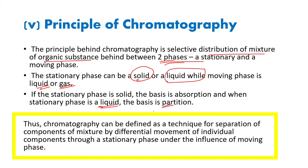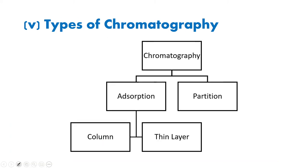So what is actually chromatography? Chromatography can be defined as a technique for the separation of components of a mixture by differential movement of individual components through a stationary phase under the influence of a mobile phase. Chromatography has two types: adsorption and partition. Adsorption is divided into column and thin layer.